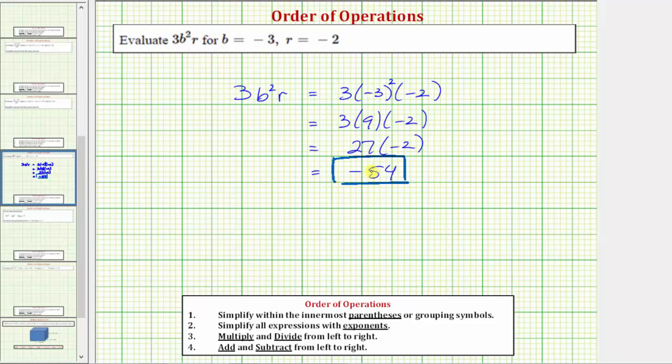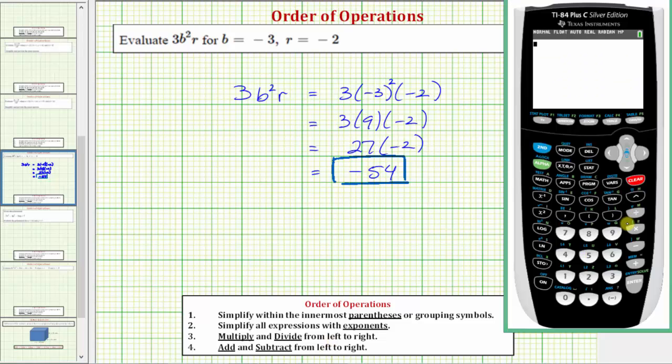Before we go, let's verify this on the graphing calculator. To do this, we'll enter the expression in this form here. So we have three times the square of negative three, times negative two.